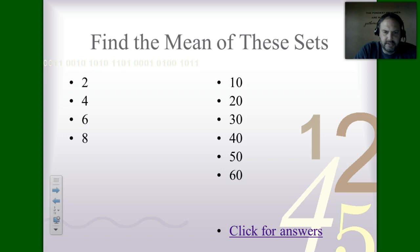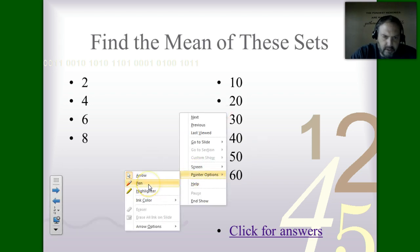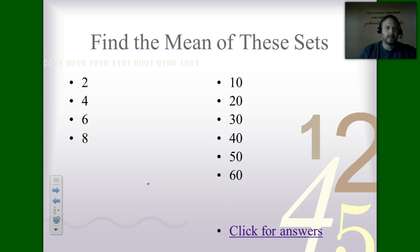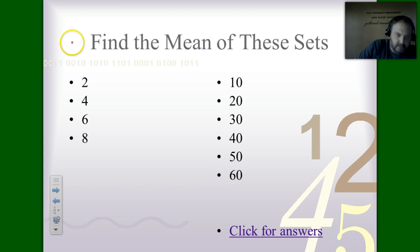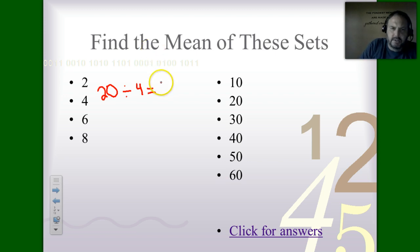Here we go — we have to find the means of these data sets. I'm going to activate the pen to show you what I'm doing. For the first data set: 4 plus 6 is 10, 2 plus 8 is 10, and 10 plus 10 is 20. We write down 20 and divide that by 4, because we have four numbers in the data set. 4 times what equals 20? The answer is 5, so the mean of this first data set is 5.